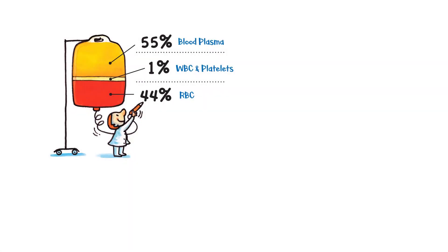Blood is composed of two major components: blood cells and plasma. Plasma occupies approximately 55% of the total blood volume, and the remainder is occupied by white blood cells, platelets, and red blood cells.